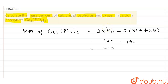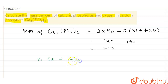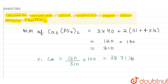The molecular mass of calcium phosphate is 310. Now, mass percent of calcium = mass of calcium (120) ÷ molecular mass of calcium phosphate (310) × 100 = 38.71%.